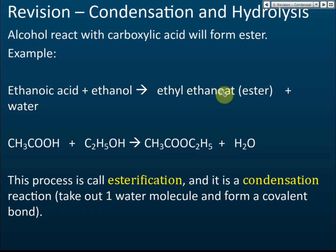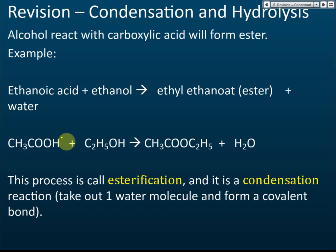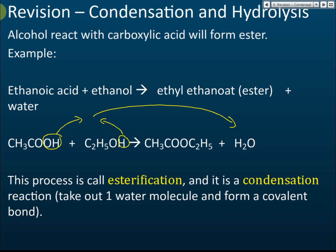The product is ethyl ethanoate, and a water molecule is also produced. What happens in this reaction is that the OH from the carboxylic acid and the H from the alcohol are removed. These OH and H combine together to form water. After removing OH and H, the alcohol and carboxylic acid join together to form the ester.